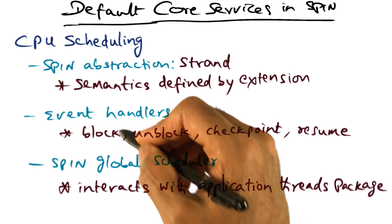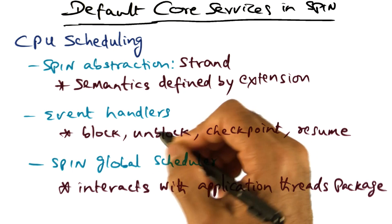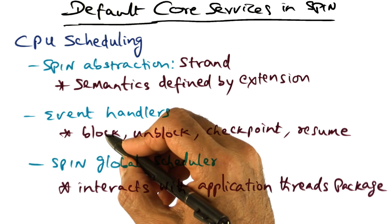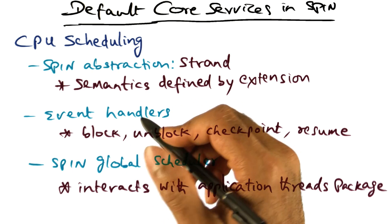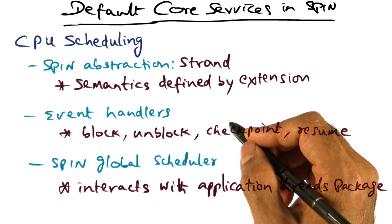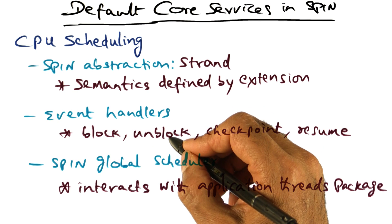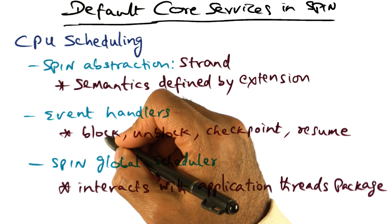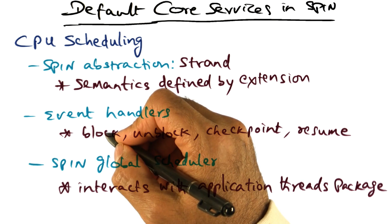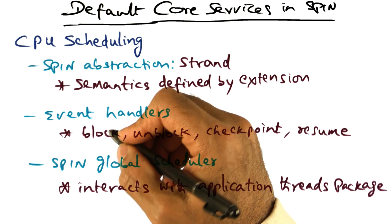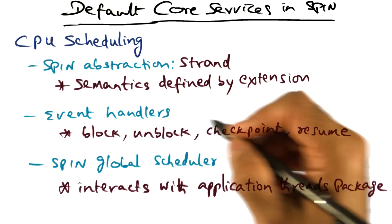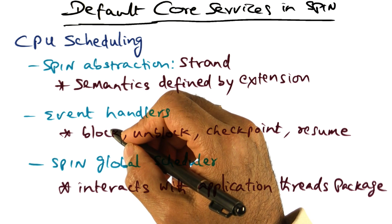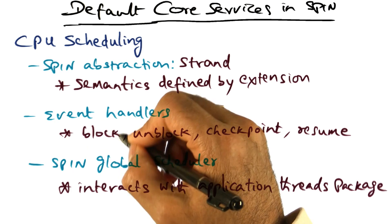The extensions' event handlers have to give the semantic meaning of what needs to happen when these event handlers are called, because these are only interface functions. What needs to happen when an interface function is called is up to the extension. For example, a disk interrupt handler may result in an unblock event being raised for a particular strand that was waiting for disk IO completion. Similarly, if an application makes a blocking system call, the service providing that facility will raise the block event, which results in the extension saving the state of the currently running process and placing it in the appropriate queues to wait for that system call to complete.